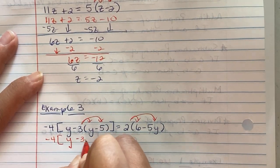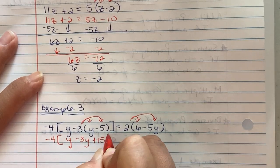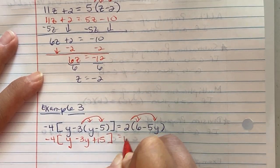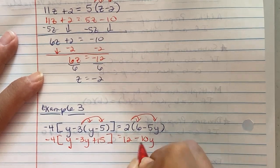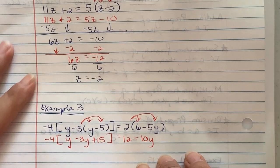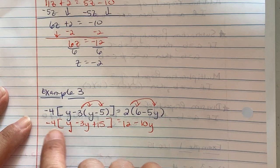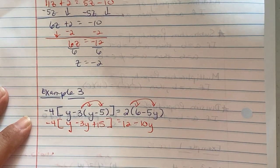You become 12 minus 10y. So the right side is already broken out. The left side still needs to go. First thing we do is we're going to combine like terms on the inside.